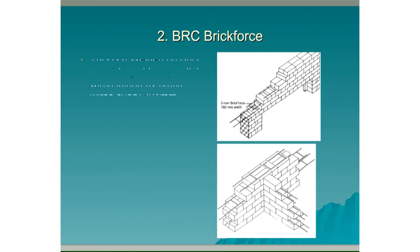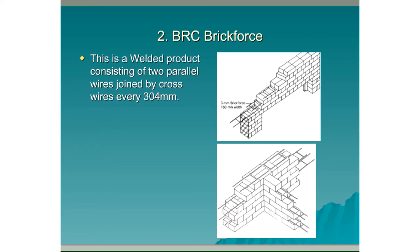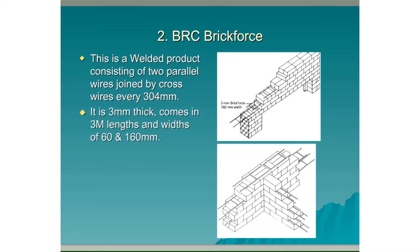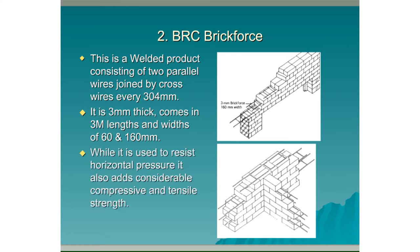Brick Force: This is a welded product consisting of two parallel wires joined by cross wires every 304mm. It is 3mm thick, comes in 3m lengths and widths of 60 and 160mm. While it is used to resist horizontal pressure, it also adds considerable compressive and tensile strength.